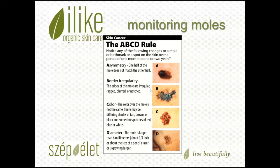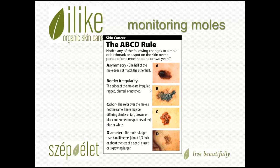The A stands for asymmetry — if one half of the mole does not match the other half, if they're asymmetrical, you probably need to have that checked out by a dermatologist. The B stands for border irregularity — the edges of the mole are very irregular, often ragged looking, blurred, or even notched.